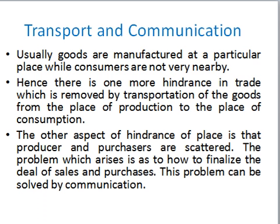Next is transport and communication. Goods are produced at one particular place but consumers are scattered, so it's not possible for a producer to sell the product to the consumer directly. There is a strong need for transport and communication. Transport acts like arteries in your body — just as blood is carried by veins and arteries, good transport helps a producer to send its product to different areas.